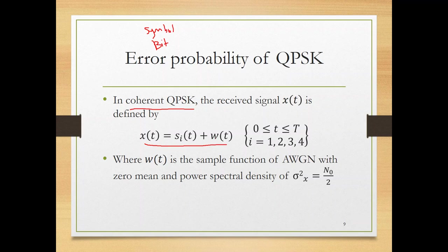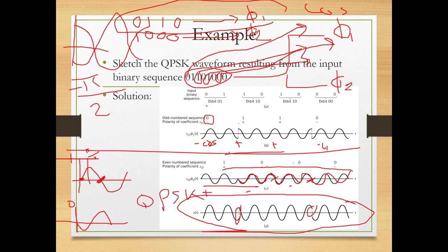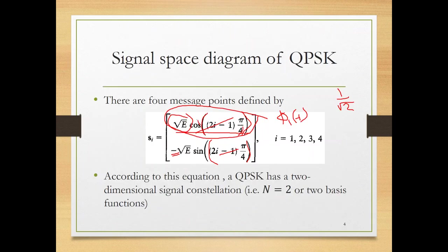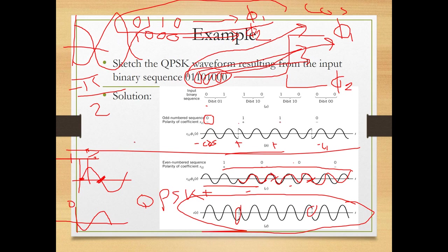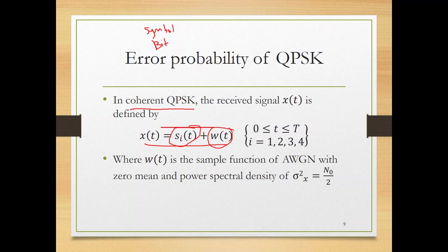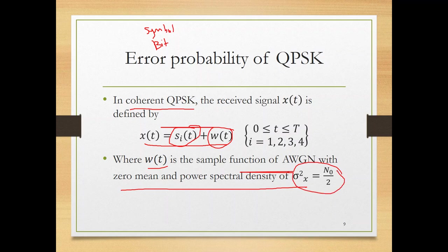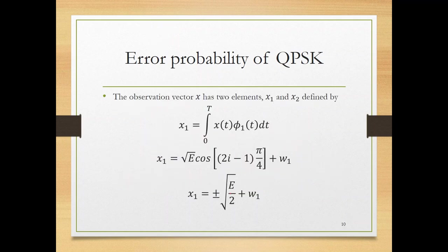For coherent QPSK, the received signal is x(t) = s_i(t) + w(t), where s_i(t) is the transmitted symbol and w(t) is additive white Gaussian noise with zero mean and power spectral density N₀/2, over 0 ≤ t ≤ T, with i from 1 to 4.